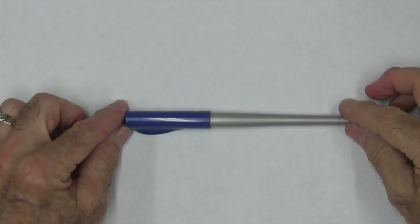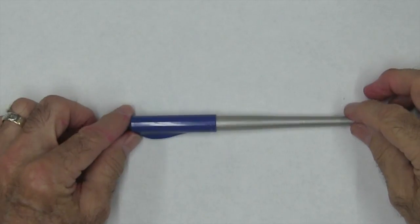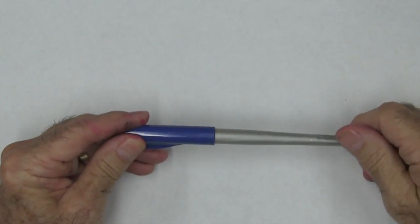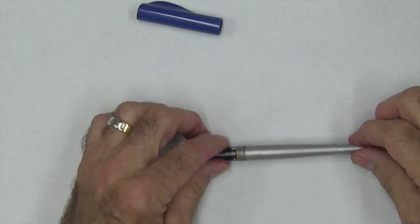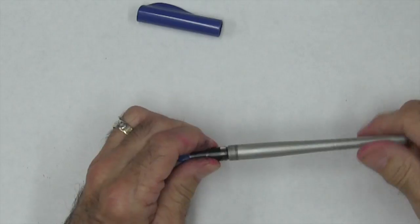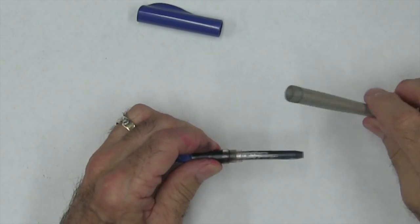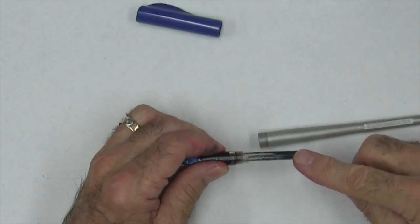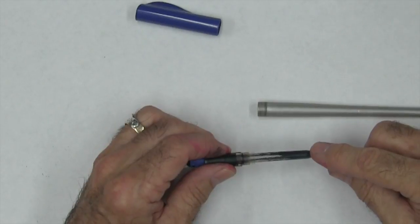I want to show you today how you can refill the Pilot Parallel Pen by putting ink in the barrel instead of using the cartridge. When you first disassemble this pen, remove the cap, and then remove the body of the pen. Inside the body is where the cartridge had been.